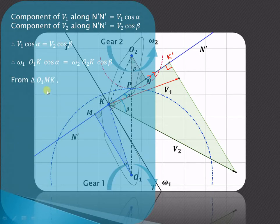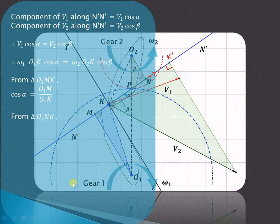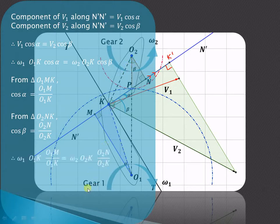From the right-angle triangle O1MK, cos alpha equals the adjacent side O1M divided by the hypotenuse O1K. Similarly, from the right-angle triangle O2NK, cos beta equals the adjacent side O2N divided by the hypotenuse O2K. We can now substitute these values into our equation.